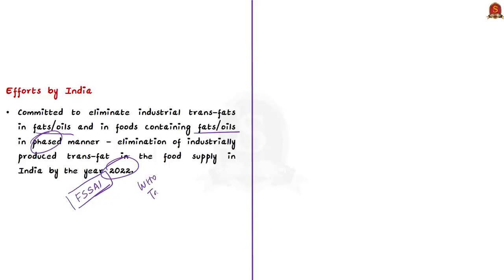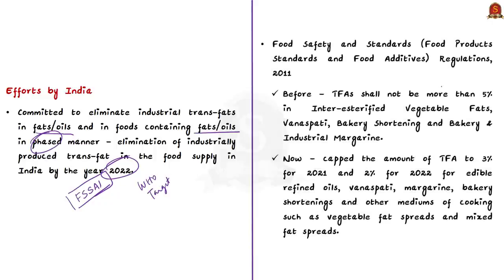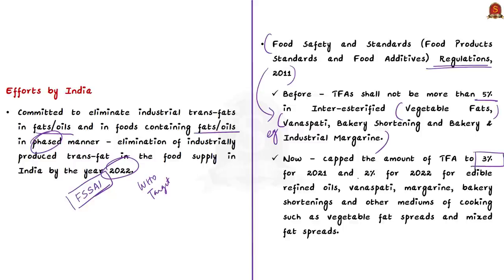FSSAI has taken several steps on the regulatory side. The Food Safety and Standards (Food Products Standards and Food Additives) Regulation 2011 prescribes that TFA shall not be more than 5% in inter-esterified vegetable oils, vanaspati, bakery shortening and bakery and industrial margarine. As per today's news, the 2011 regulation has been amended to further reduce the limit of TFAs — keeping the amount of TFA in oils and fats at about 3% for 2021 and 2% for 2022 — and it also applies to edible refined oils, vanaspati, margarine, bakery shortenings and other mediums of cooking such as vegetable fat spreads and mixed fat spreads.